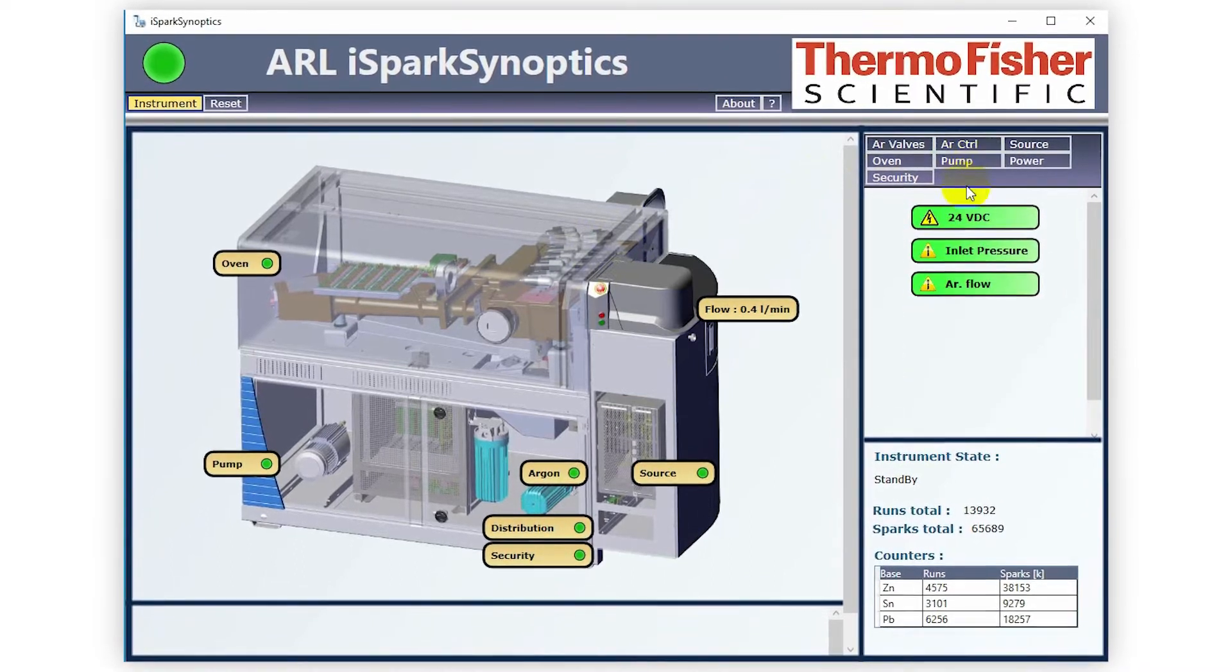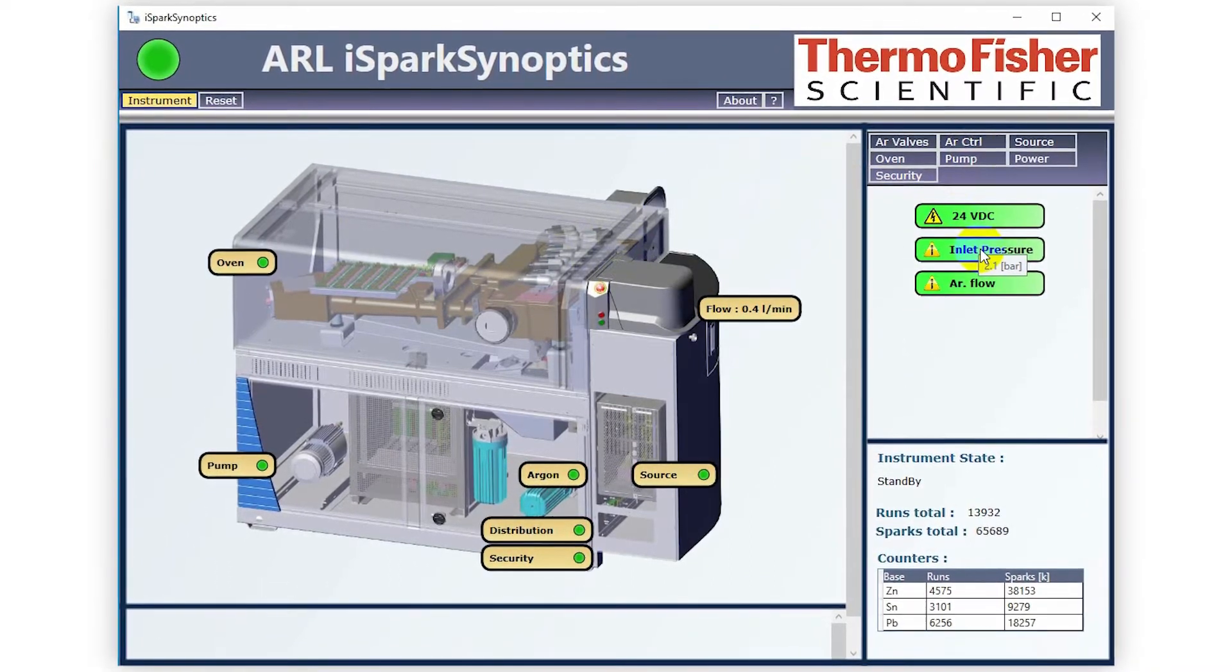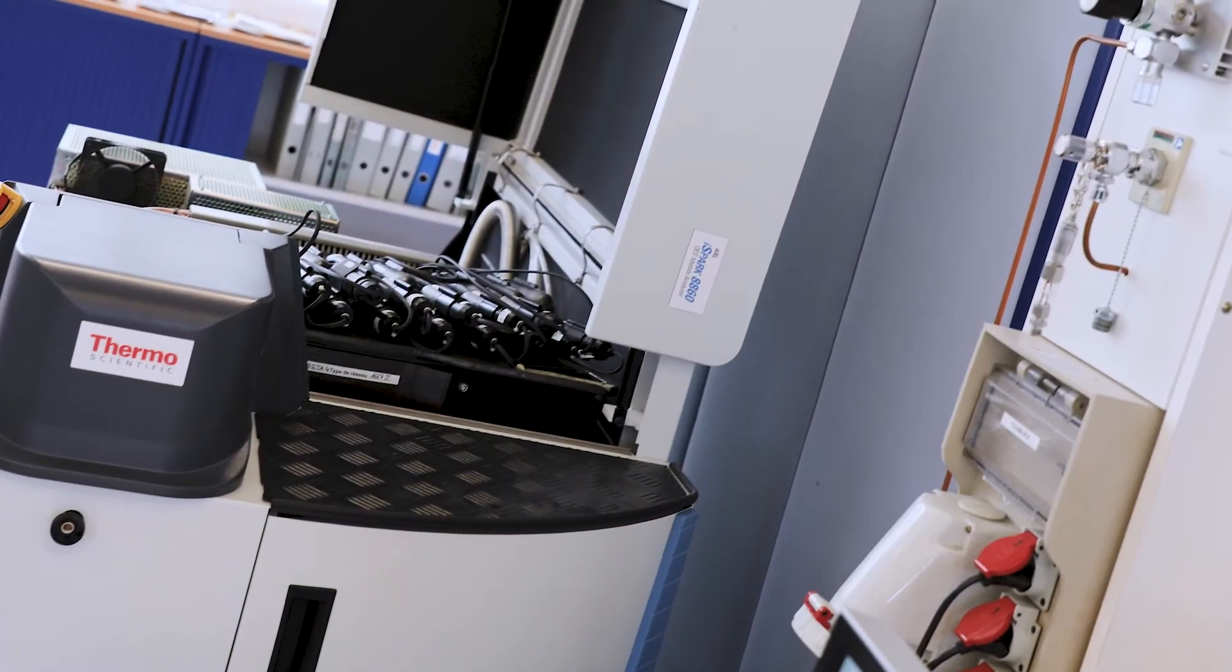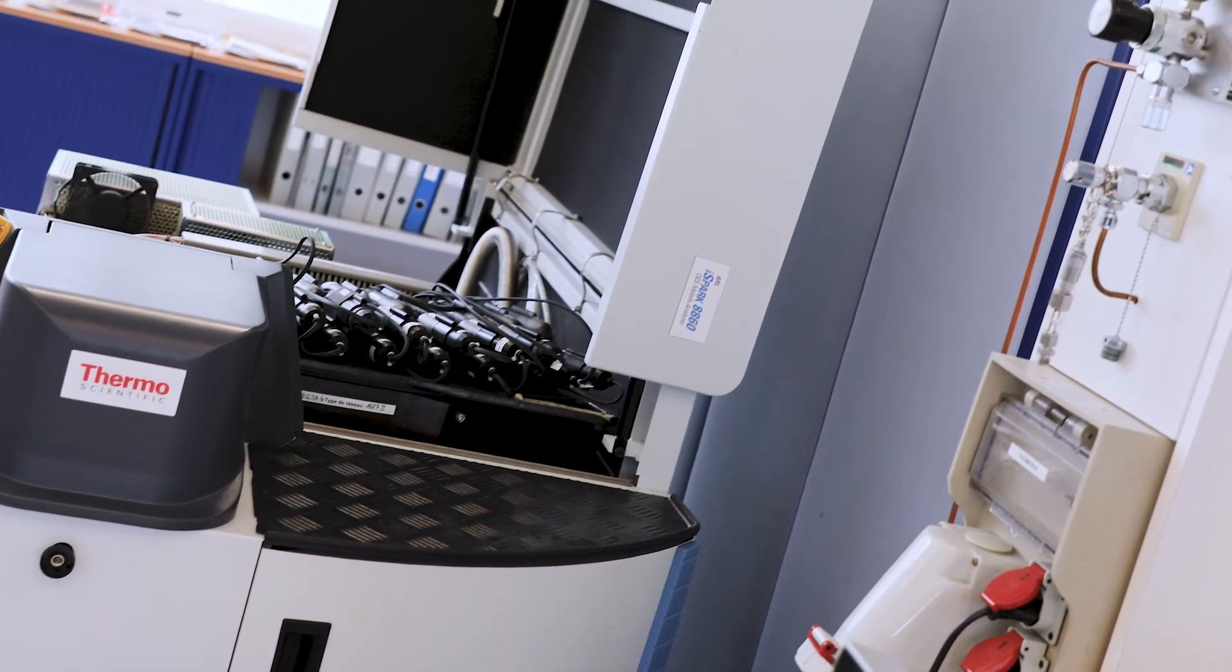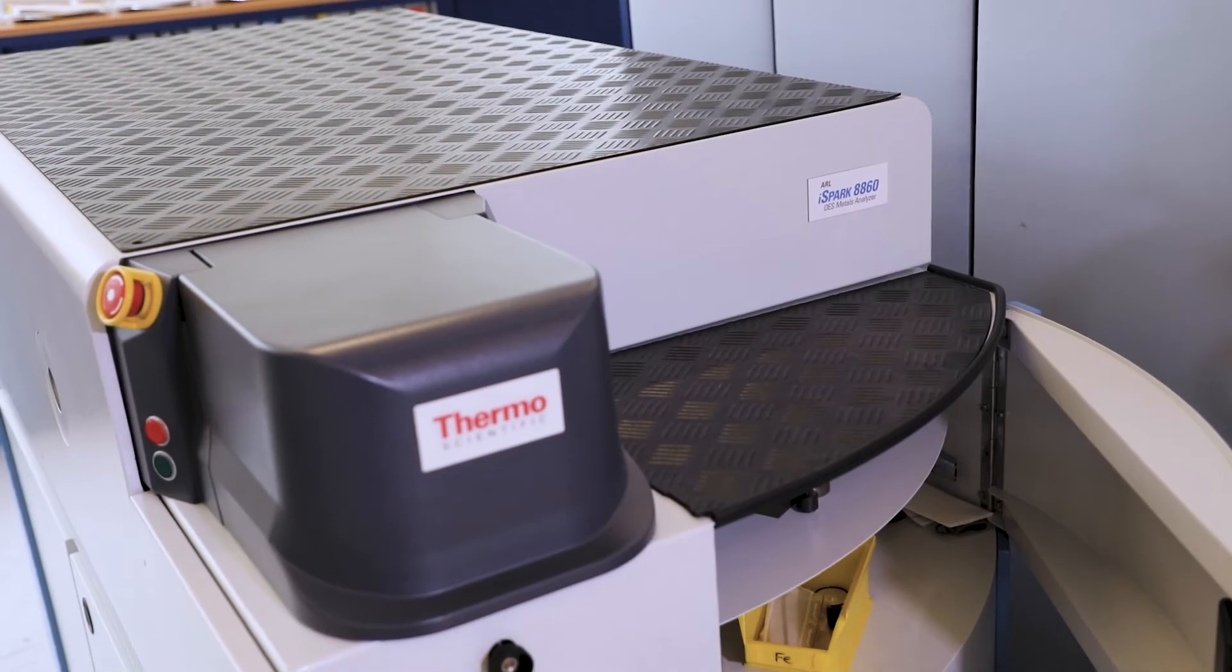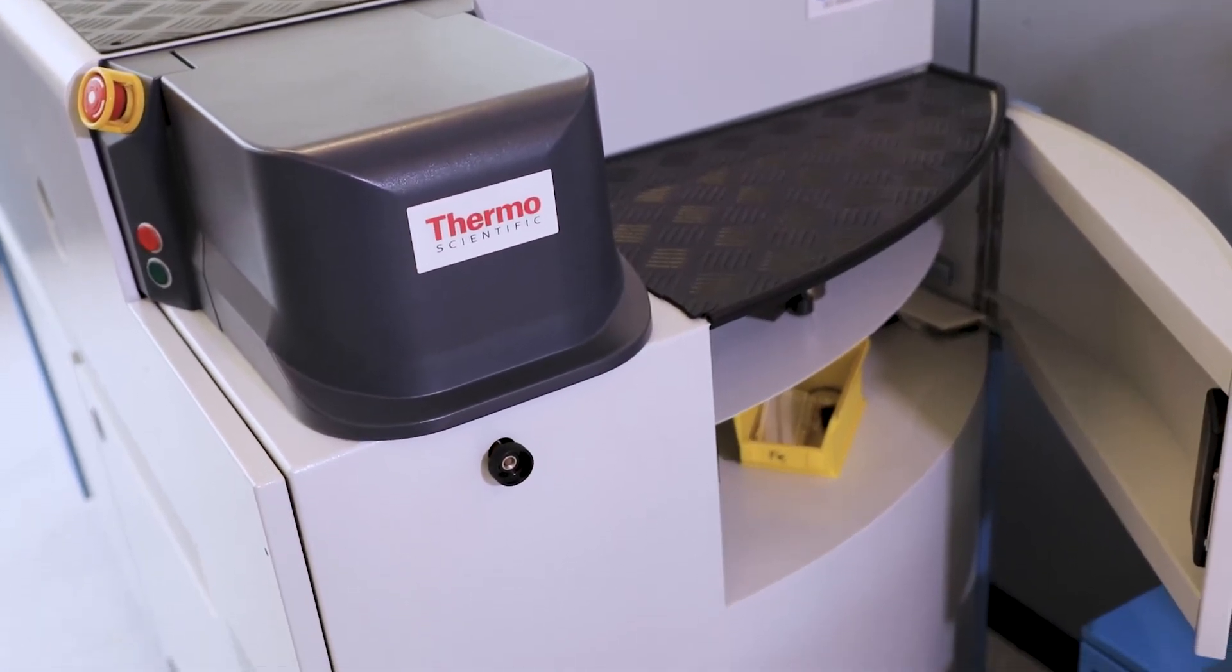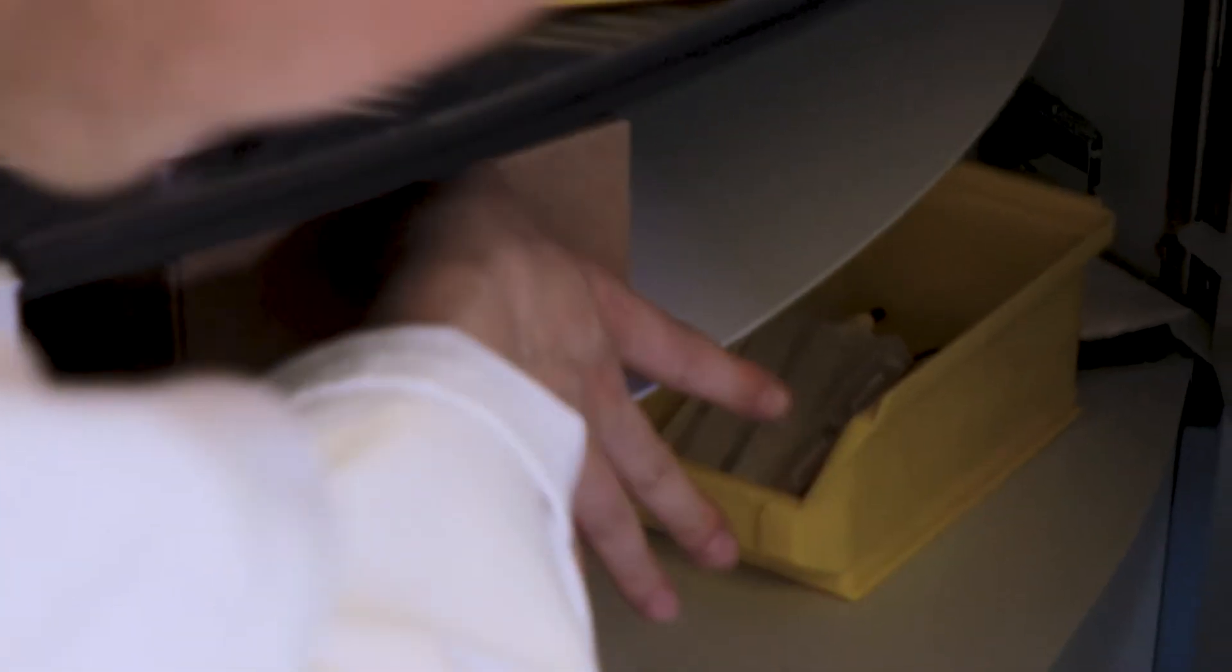The ARL iSpark was designed for increased safety, convenience, and ease of use in daily operation. The instrument can be installed against a wall, or even in a corner, as all the components are accessible from the front. Samples or accessories can be placed on the integrated worktop or in the storage compartment.